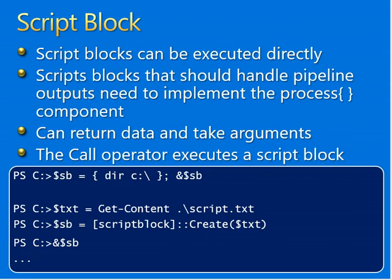More on script blocks: a script block can be executed directly. Script blocks that should handle pipeline output need to implement the process block. They can retain data and take arguments. The call operator executes a script block. The definition of a script block looks like the definition of a function except the function name is omitted. If the parameters block is not present, the script block will receive arguments through the $args variable. Switch and named parameters can be placed in the parameter statement. A switch parameter is a boolean — $true if present, $false if omitted.